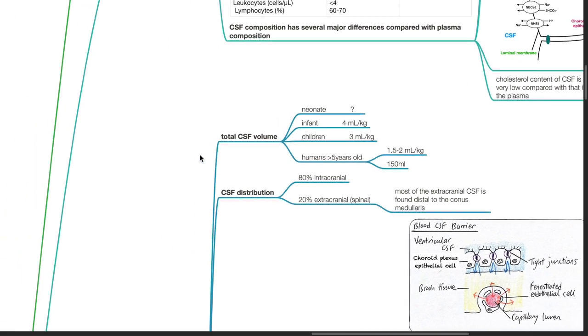Total CSF volume in infants is 4 mL per kg, children is 3 mL per kg, and in human beings more than 5 years old, it is 1.5 to 2 mL per kg, which equates to about 150 mL.